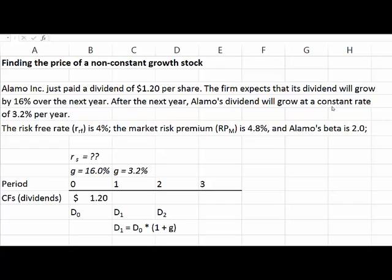After that, the dividend will grow at a constant rate of 3.2%. After the big dividend in year one, it will continue to grow at a constant rate of 3.2% forever. We are also given the risk-free rate, the premium on the market, and the beta on the stock. We will use these inputs to find the required return for this particular stock.